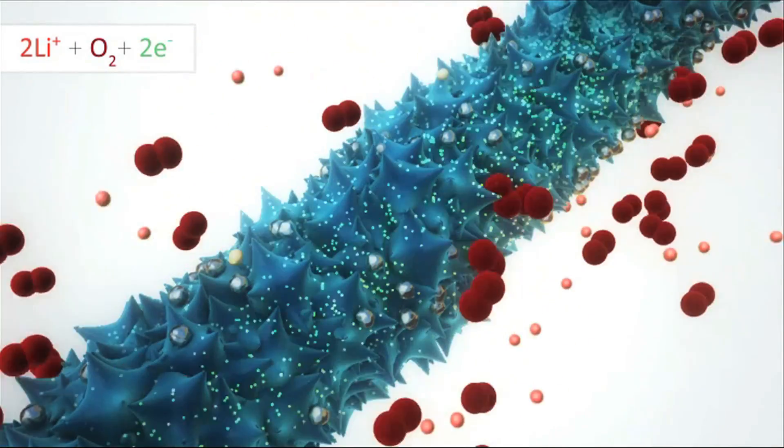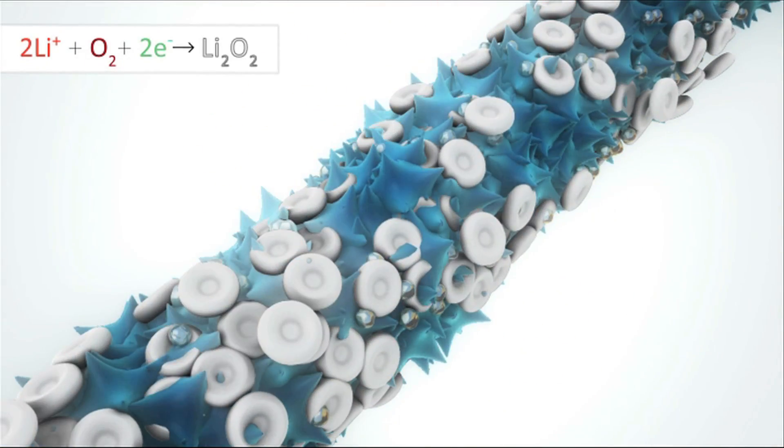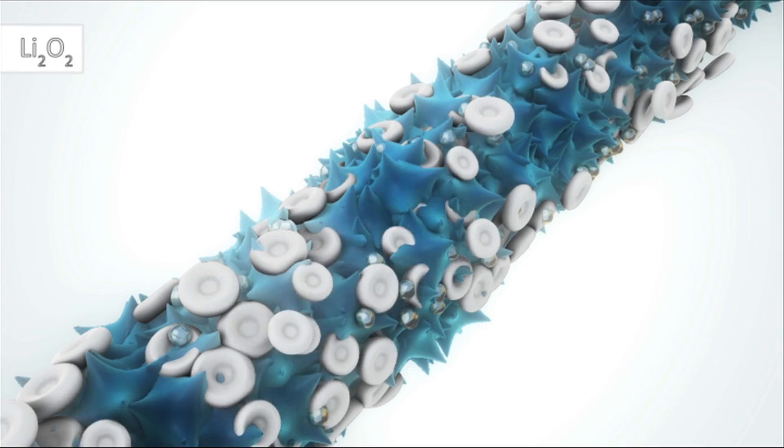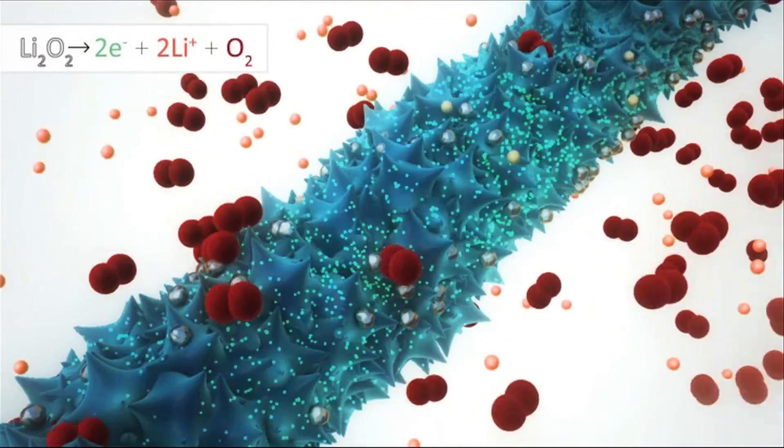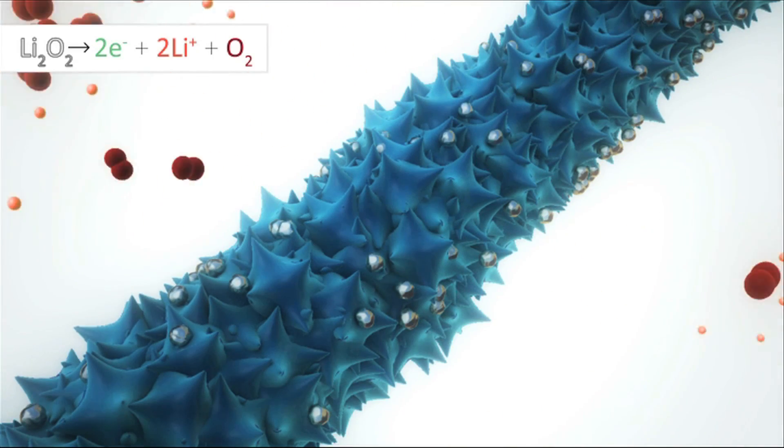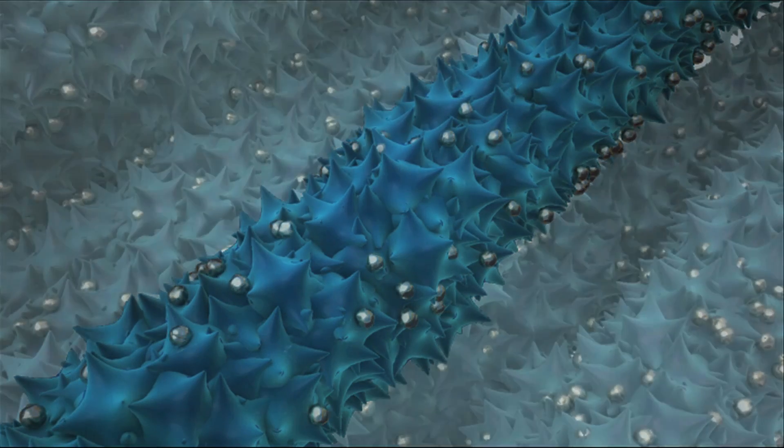These battery electrodes interact with lithium, oxygen, and electrons to form lithium peroxide. This is a reversible reaction where the lithium peroxide forms back into its components to complete the cycle.